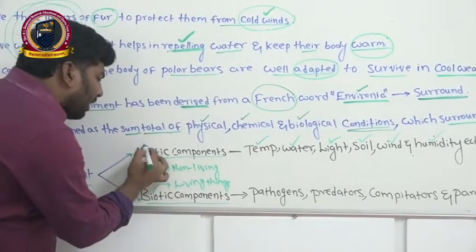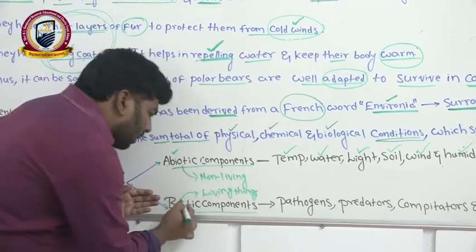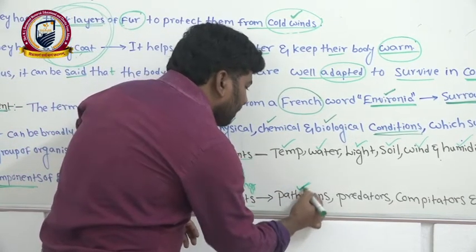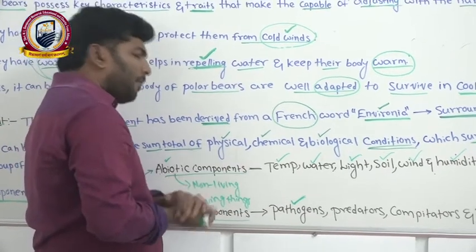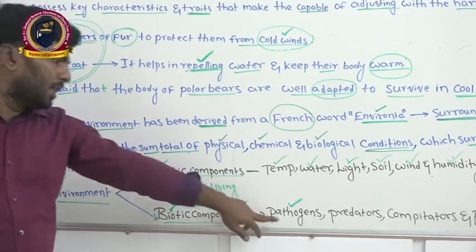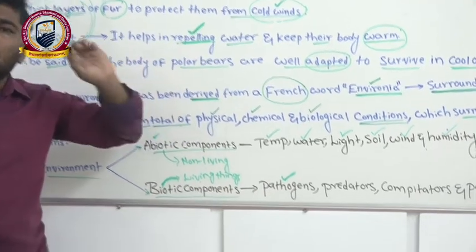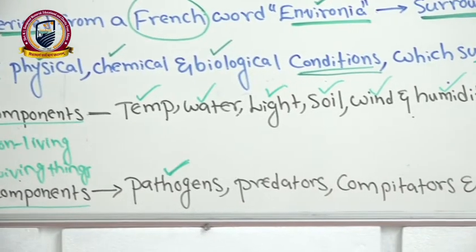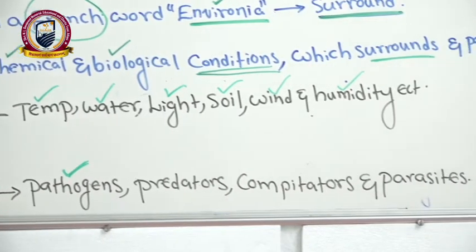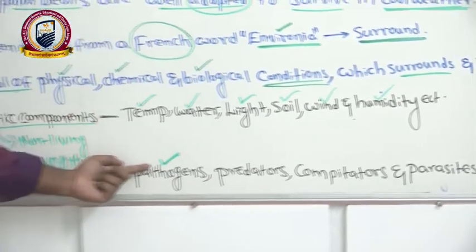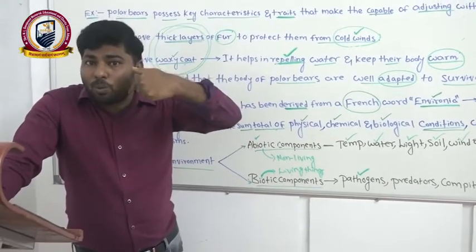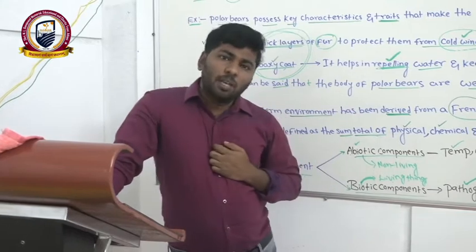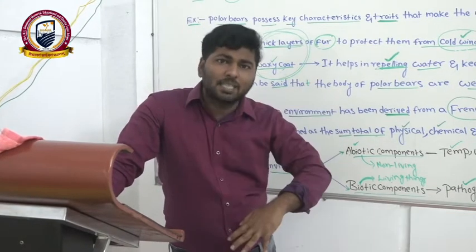Not only abiotic factors, but biotic components also influence the organism's survival. For example, pathogens — organisms that have the ability to cause diseases to living things — affect the organism's life. For instance, the rhinovirus is a pathogen that causes cold. It affects the body and changes its physiology.